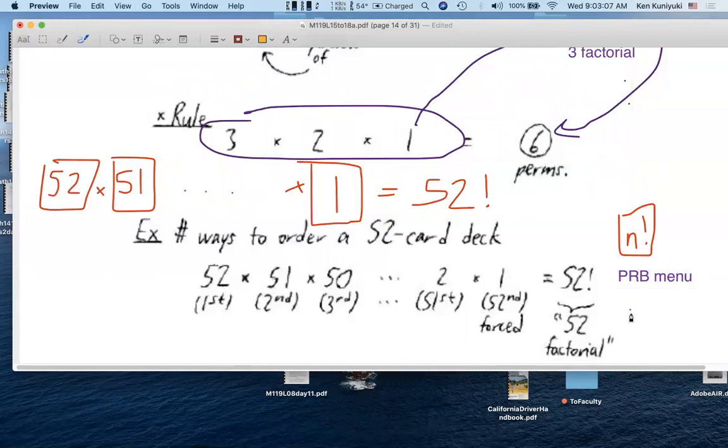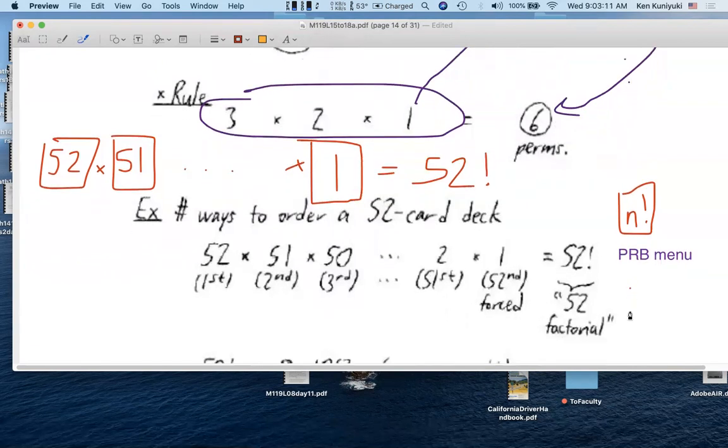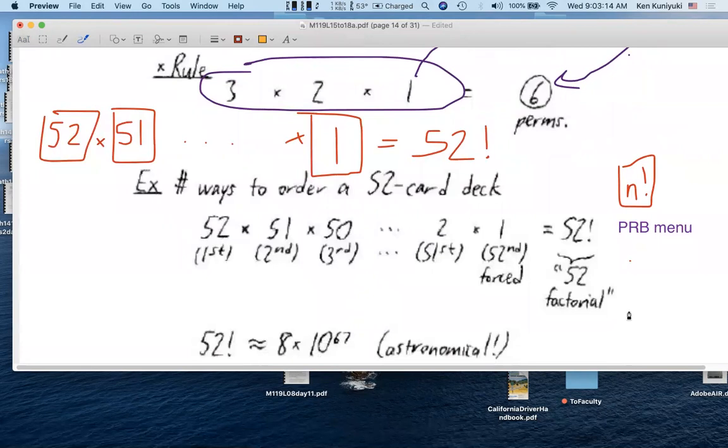What is 52 factorial? It's very large. You need scientific notation. It's about 8 times 10 to the 67th. In fact, it's a bit more than 8 followed by 67 digits, like 67 zeros.